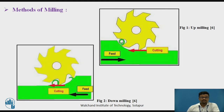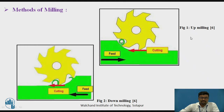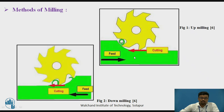We have discussed the methods of milling — there are two methods: up milling and down milling. In the first figure you can see up milling, which is called conventional milling. The second method is down milling, which is called climb milling. In up milling, the milling cutter rotates in the opposite direction to the feed provided to the workpiece.